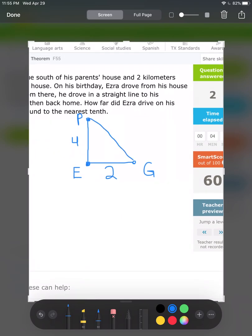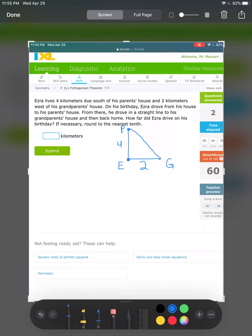On his birthday, Ezra drove from his house to his parents' house. From there, he drove in a straight line to his grandparents' house, then back home. How far did Ezra drive? Basically, this question is asking for the perimeter of the triangle.